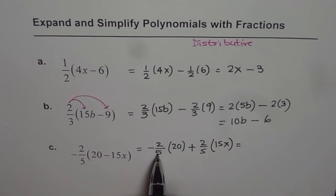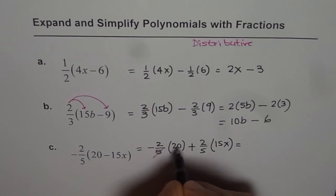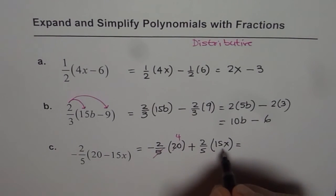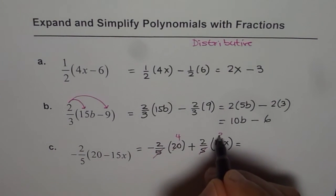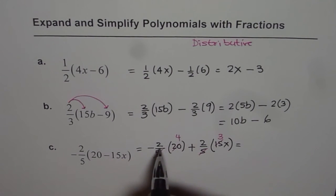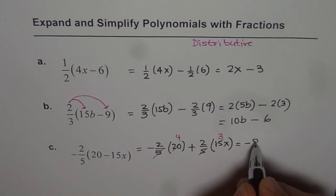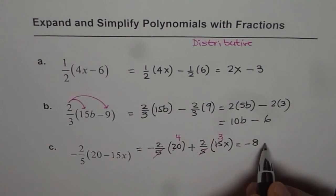Now 20 divided by 5 is 4. Let me write it down here. We have 20 divided by 5 is 4. In this case, 15 divided by 5 is 3. So we get minus 2 times 4 as minus 8 plus 2 times 3 is 6, 6x.